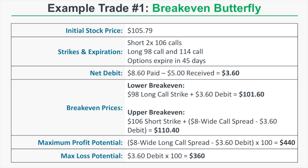We pay a net debit of $3.60. The lower break-even price is the long call strike of $98 plus the debit of $3.60, which equals $101.60. The upper break-even is the short strike of $106 plus the $8-wide call spread minus the $3.60 debit, which equals $110.40. Maximum profit potential is $440 — from the $8 wide spread minus $3.60 debit times 100. Maximum loss is $360.